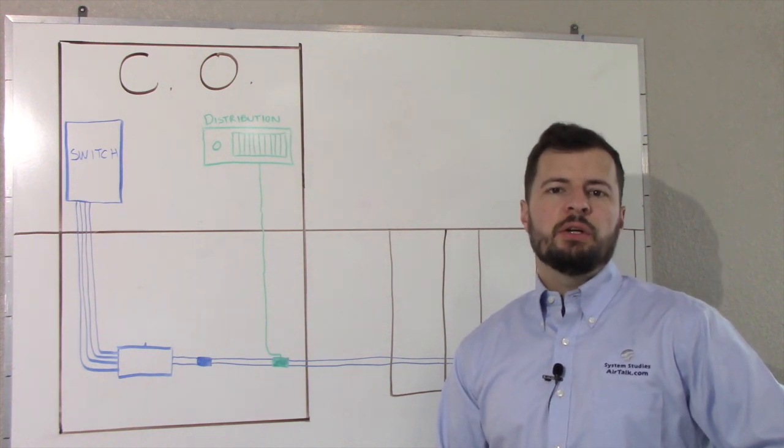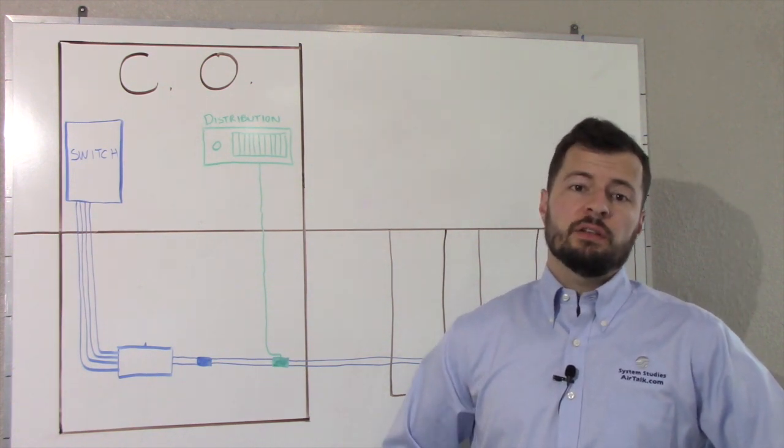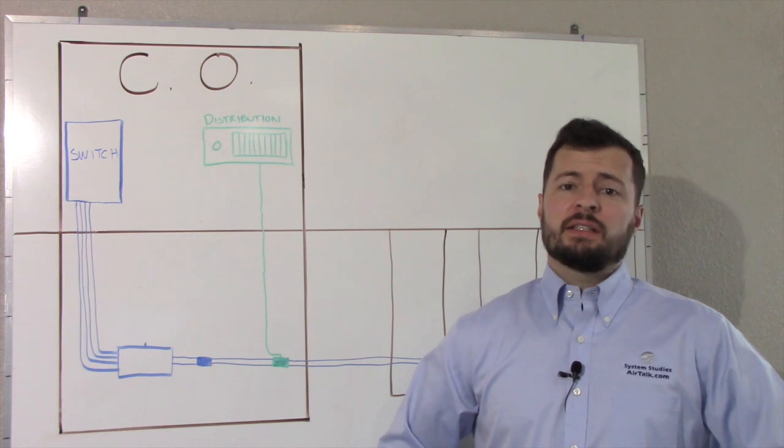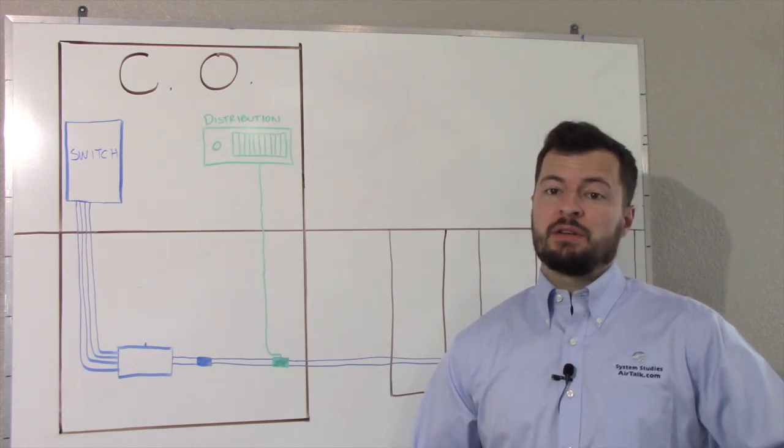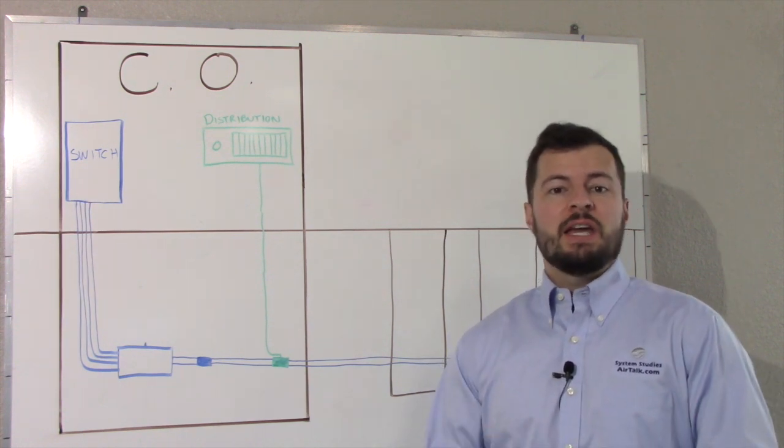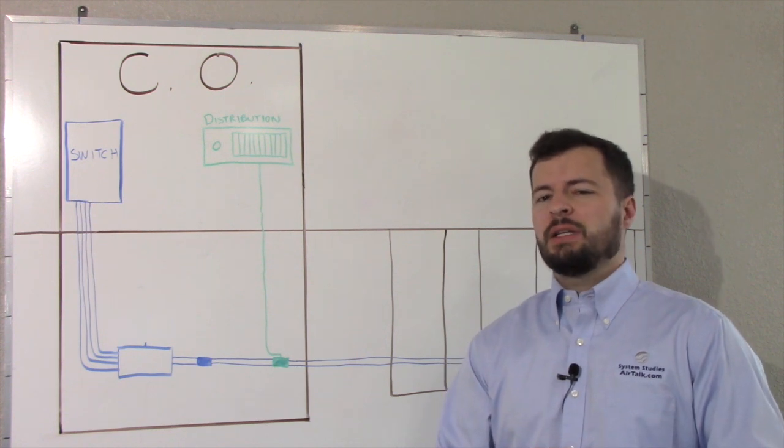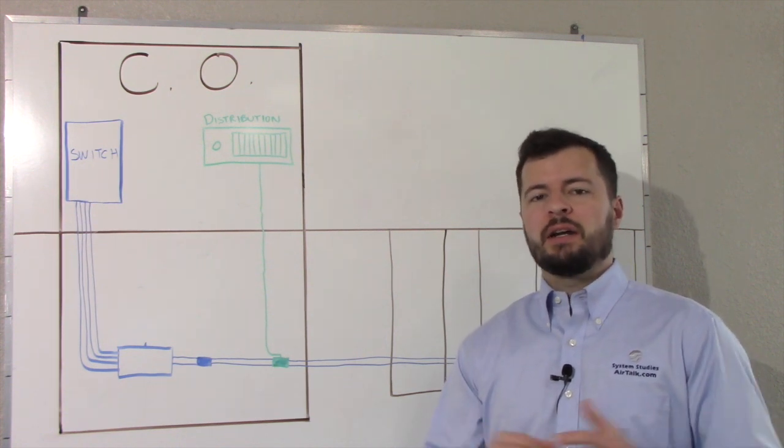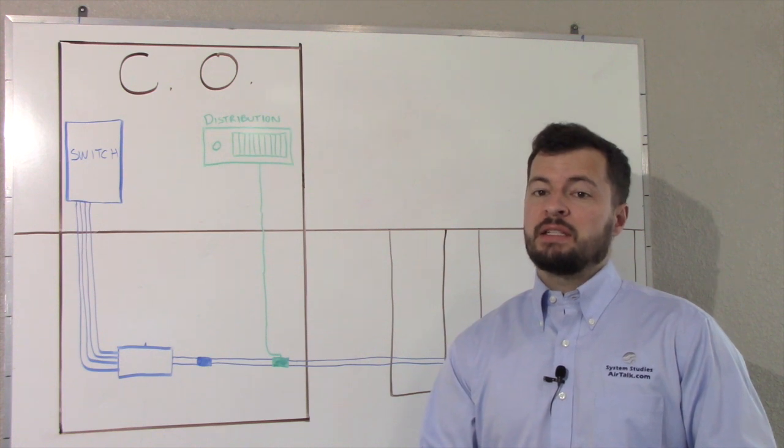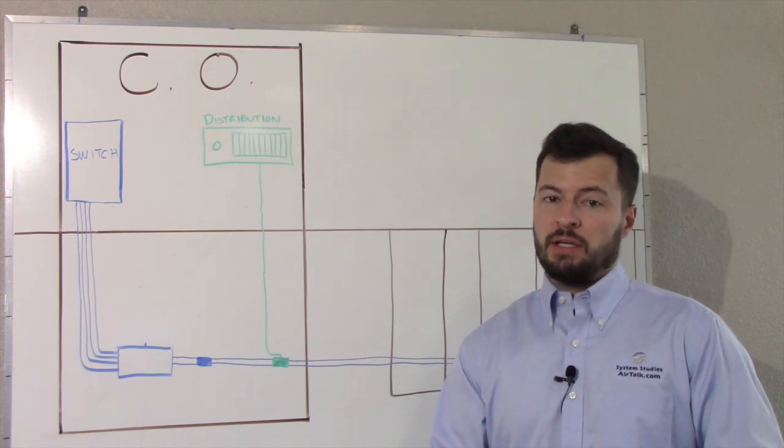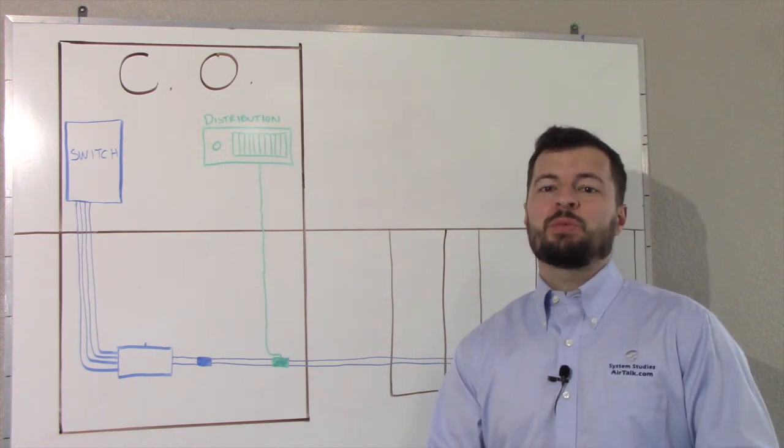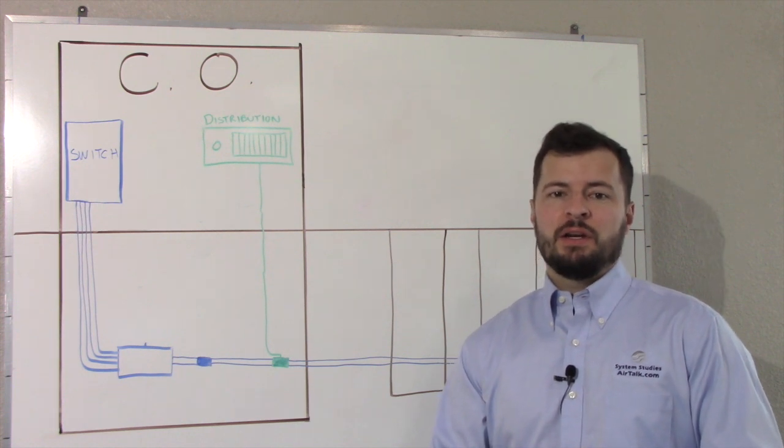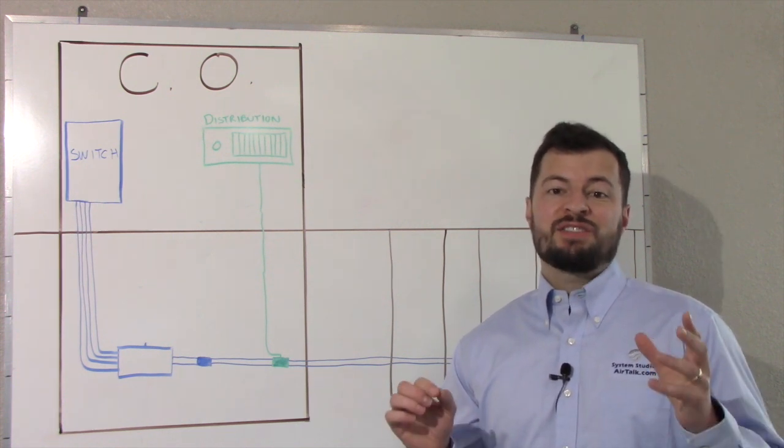In a previous video, we talked about leak locating from a tracer gas tank in the field. If you are using tracer gas to leak locate from the central office, there are a few things to keep in mind. Tanks in the central office go flat quickly because the flow rates are generally higher. You need to be extra careful that your tracer gas tank is not flat by the time you get to leak locating. Here are a few tips and tricks that we use to help get the job done. First, we need to identify the highest flowing cable.